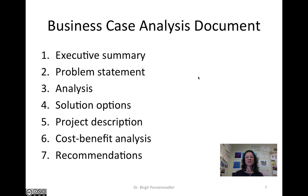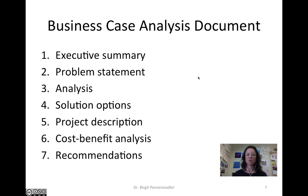The business case analysis document is often structured in seven sections: the executive summary, problem statement, analysis, solution options, project description, cost-benefit analysis, and recommendations. In the following, we'll look into each of those sections.